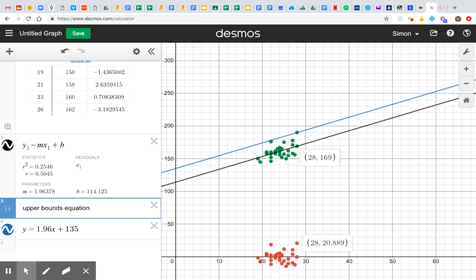Expected value is 169. Take away from that 20.889 and I get 148.1.